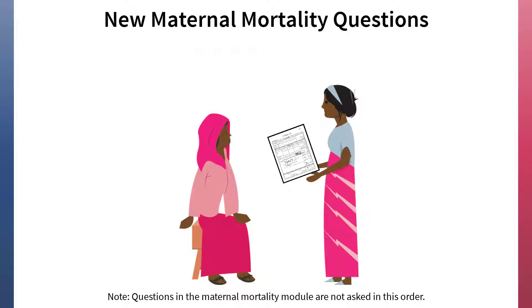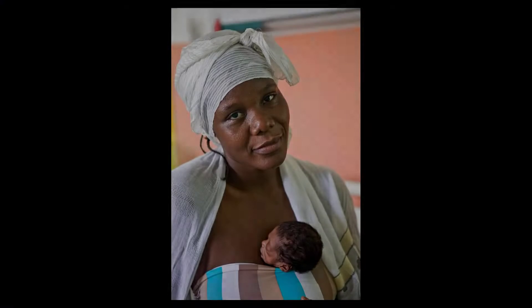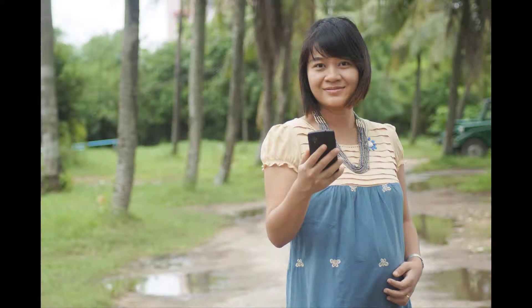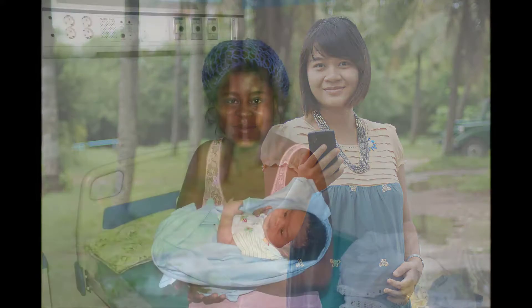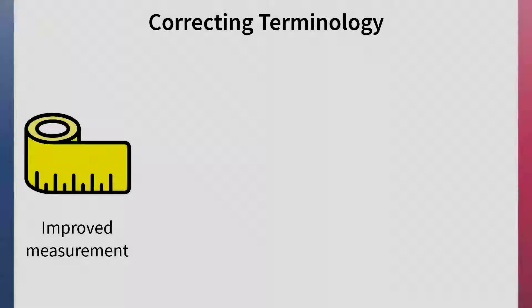Additionally, respondents who report that their sister died in the two months following a pregnancy are then asked how many days after the pregnancy the sister died. In addition, DHS is correcting the terminology that was previously used. When the maternal mortality module was first added to the DHS questionnaire, the distinction between pregnancy-related and strictly maternal deaths was broadly overlooked.